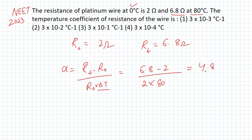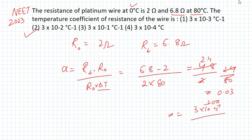Solving this: 4.8 divided by 2 equals 2.4, then 2.4 divided by 80 equals 0.03. This is 3 times 10 to the power minus 2 per degree Celsius, which is the unit of alpha. So 3 times 10 to the minus 2 per degree Celsius, and option 2 is the correct answer.